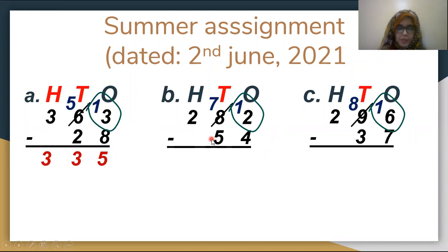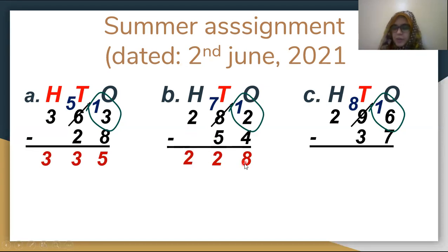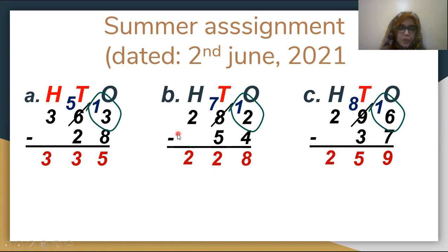Part B: 4 minus 3 is 1 — wait, 14 minus 3 gives the ones, 7 minus 5 is 2, and 2 stays as it is. The answer is 228. Part C: 16 minus 7 is 9, 8 minus 3 is 5, and 2 stays as it is. The answer is 259.